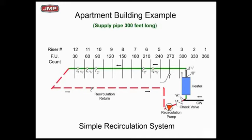We go to the fixture unit charts and come up with the GPM to size the pipe. The pipe has already been sized: 2½ inch in the first section, stepping down through each section all the way to 1¼ inch at the very end. Then the red piece of pipe is the hot water recirculation return line — we draw water through that back to the water heater to offset the heat loss in the 300-foot supply pipe. In our example, we're going to hold it to a 10-degree delta T, coming up with the heat loss in BTUs per hour and the GPM required, to keep hot water available at riser number 12 even at 2 a.m.